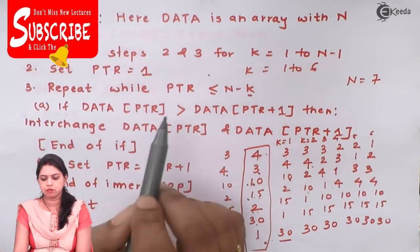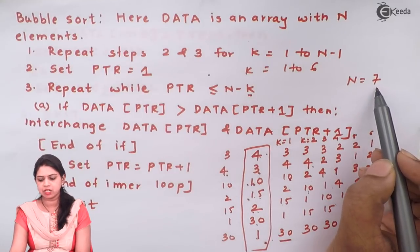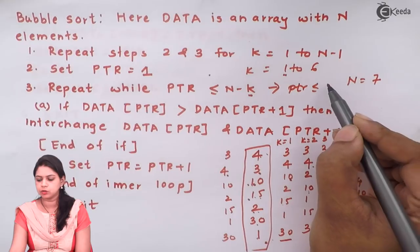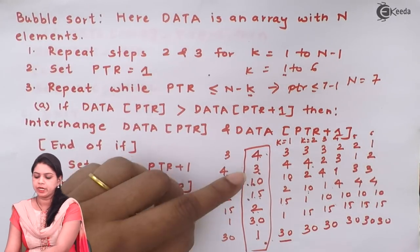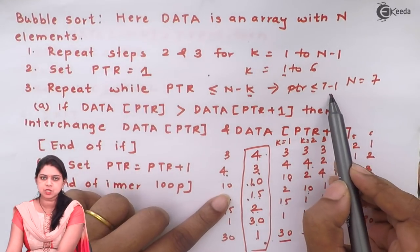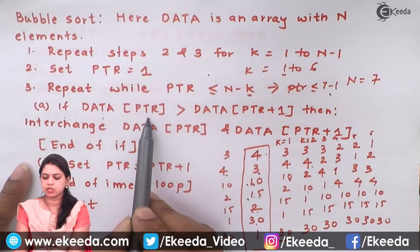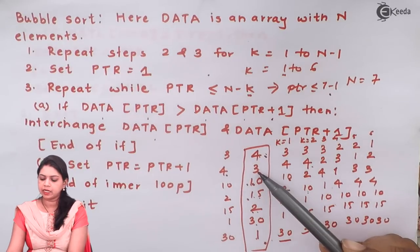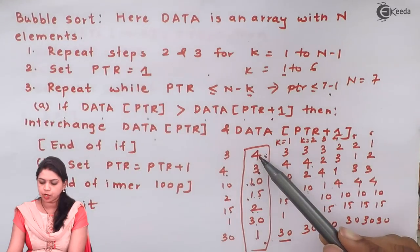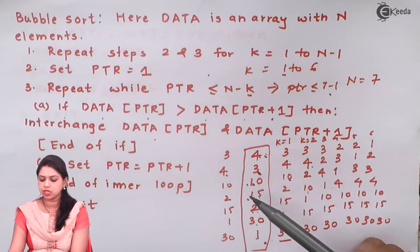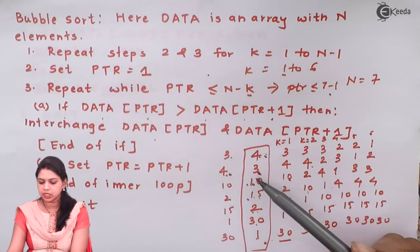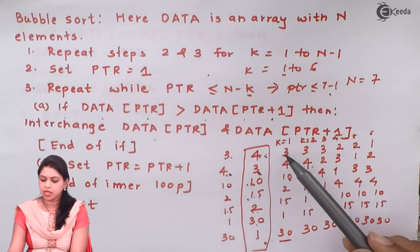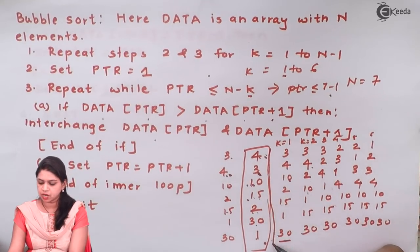We repeat steps for pointer less than or equal to n minus k. With n equal to 7 and k equal to 1, the pointer will rotate through the list a maximum of 6 times. If data[pointer] is greater than data[pointer+1], we interchange the elements — for example data[pointer] is 4 and data[pointer+1] is 3, so we swap them, 3 goes up and 4 comes down. Then we increment the pointer and compare the next pair — 4 and 10, 10 and 2, 2 and 15, 15 and 1, 1 and 13 — and at the end we get the first pass result.